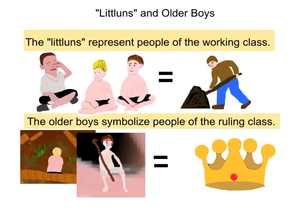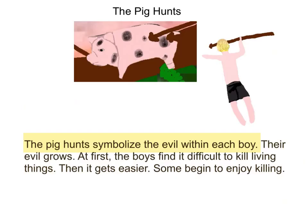The little uns represent people of the working class; the older boys symbolize people of the ruling class. The pig hunts symbolize the evil within each boy — their evil grows. At first the boys find it difficult to kill living things, but then it gets easier, and some begin to enjoy killing.